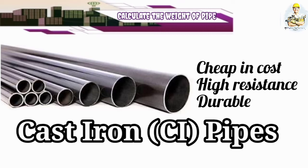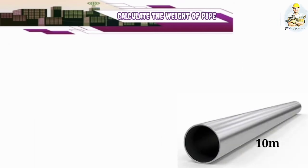Now I'll show you how can we calculate the weight of the cast iron pipe. Suppose I have a pipe of 10 meters long, the internal diameter of the pipe is 12 centimeters, and the external diameter is 16 centimeters. So how can we calculate the weight of the given pipe?